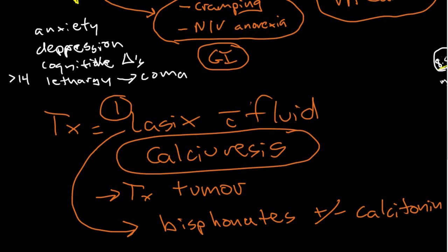Those are the mainstays of treatment. I would think first about Lasix and fluid. If the calcium level is very high or they're not responding to Lasix and fluid, consider giving bisphosphonates and/or calcitonin. And obviously, you're going to want to be thinking about treating the underlying cancer. That's all I have for you for hypercalcemia and cancer. I will see you in my next video.